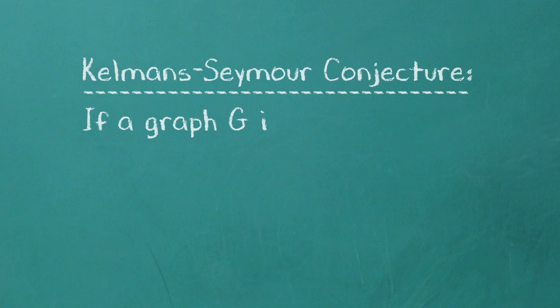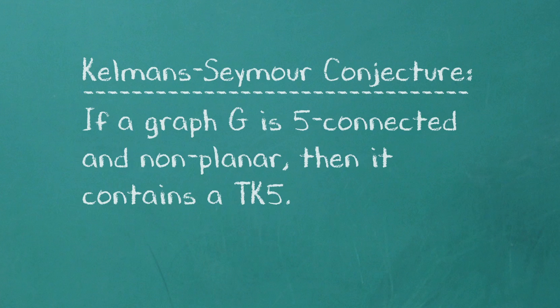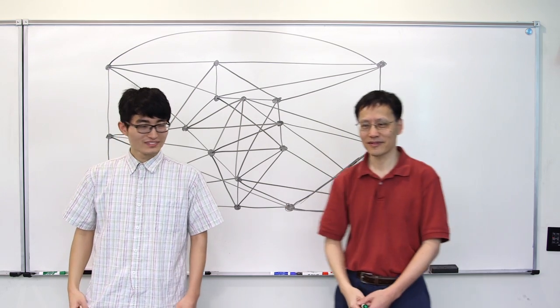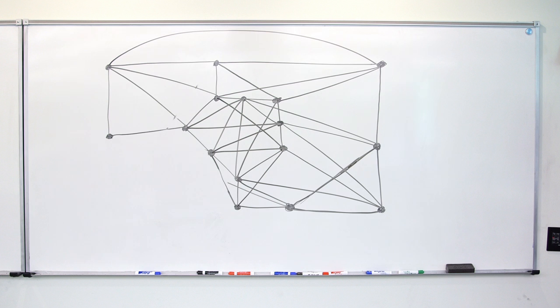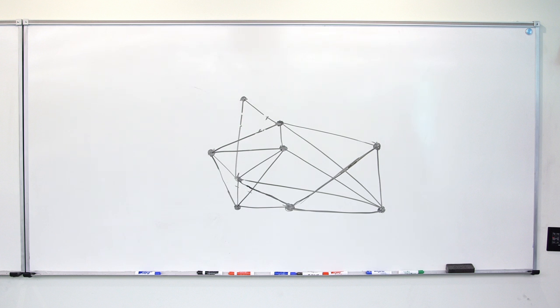It says, if a graph G is 5-connected and nonplanar, then it contains a TK5. That there on the whiteboard is an example of a 5-connected nonplanar graph, and later on we'll see a TK5 inside it. But for now, let's uncomplicate.